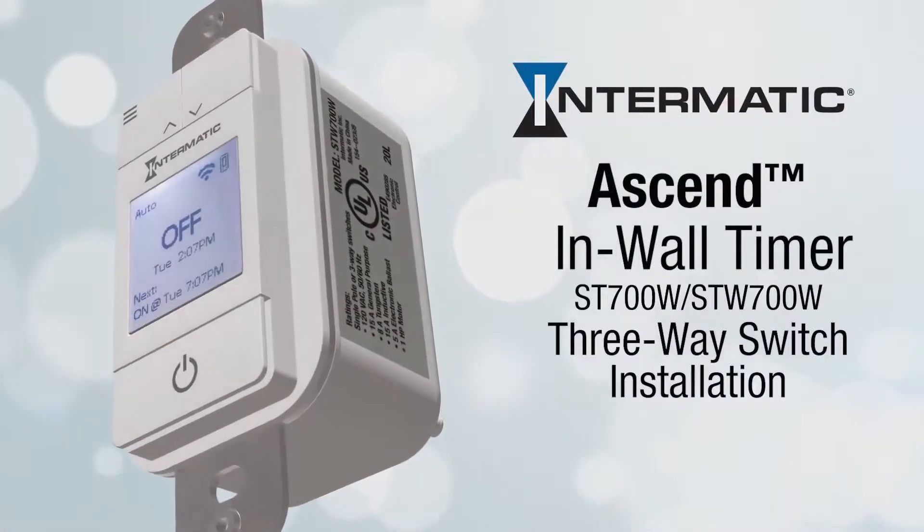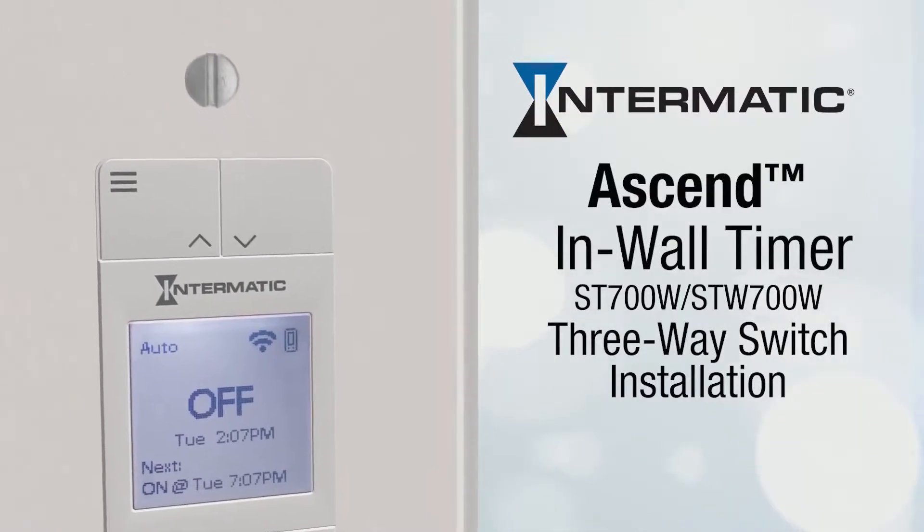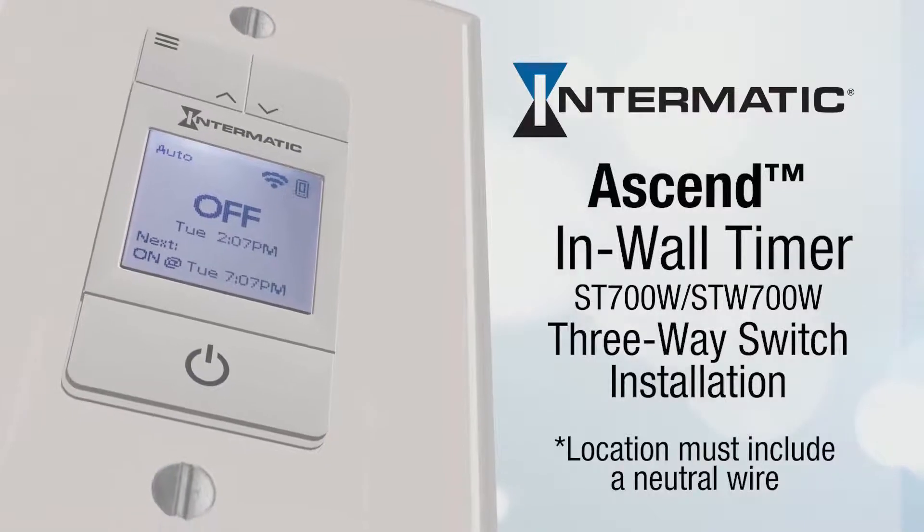This video will show you how to install the Intermatic Ascend 7-Day Programmable Timer into a 3-way switch. Please note that the Ascend can only be installed in locations that include a neutral wire.